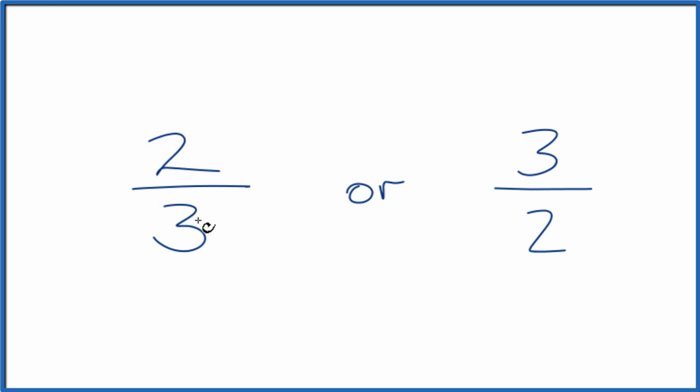Two divided by three, since two is smaller, it's gonna have to be less than one. This should be a decimal here.